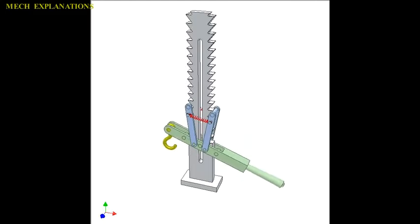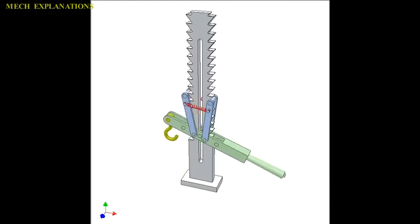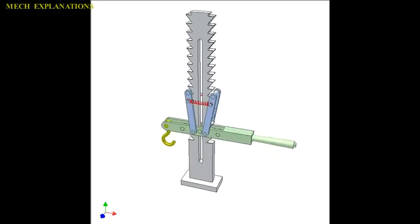The teeth are uniform but asymmetrical, with each tooth having a moderate slope on one edge and a much steeper slope on the other edge.